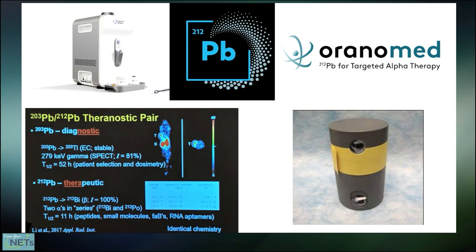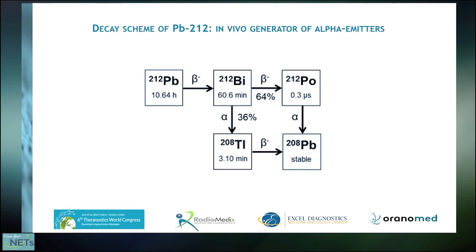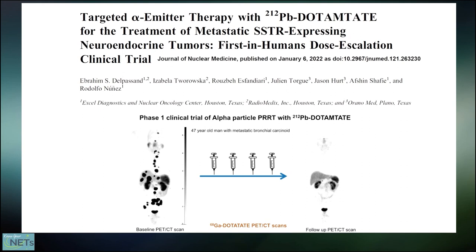The new star on the horizon with great hopes is Lead-212, or Pb-212. Different generators are now available, and we recently established one generator at the University of Mainz. As you can see on the decay scheme, Lead-212, which has a half-life of 10.6 hours, decays to Bismuth-212 and later to polonium, and is a very powerful alpha emitter, as shown by the group at Excel Diagnostics in Texas with Dr. Delpassand, who reported at the last World Congress and published in the Journal of Nuclear Medicine.